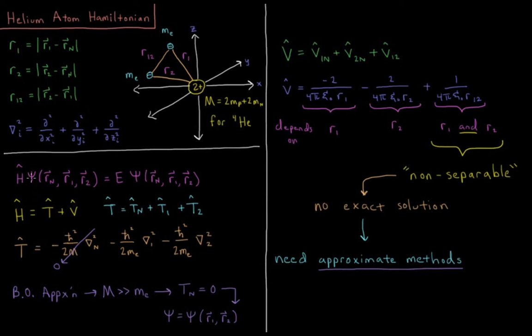Our wave function, psi, is going to be a function of the coordinates of our nucleus, the coordinates of electron 1, and the coordinates of electron 2. We're going to simplify this a little bit by keeping our nucleus fixed at the origin. So that's going to be H psi equals E psi. Our Hamiltonian acting on our wave function is going to give us our energy times our same wave function back.